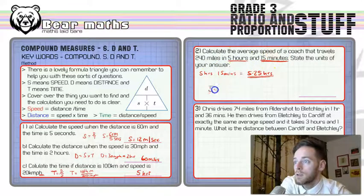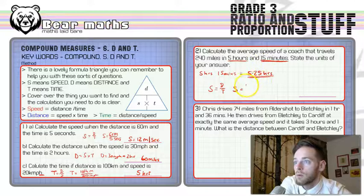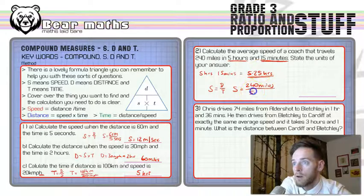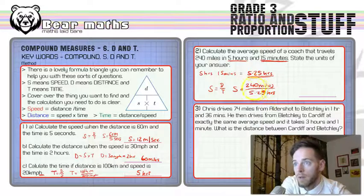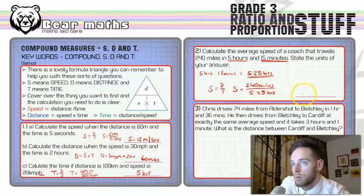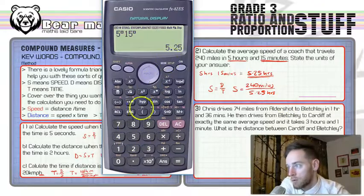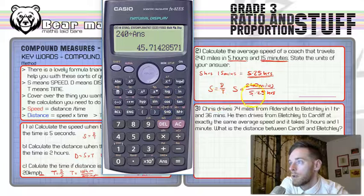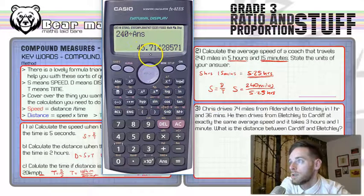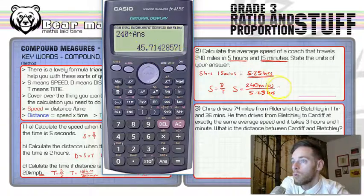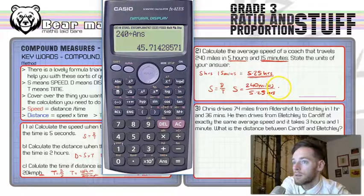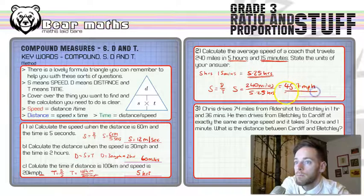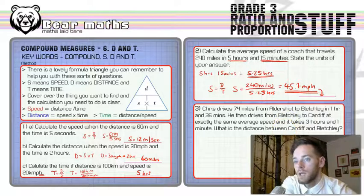Now that's sorted, we can do this question relatively simply. Speed equals distance divided by time. Speed equals 240 miles divided by 5.25 hours. That line stands for per - miles per hour. On the calculator, 240 divided by that answer equals 45.7124. That's an awkward number, but let's round it to 45.7 mph. There's our answer.